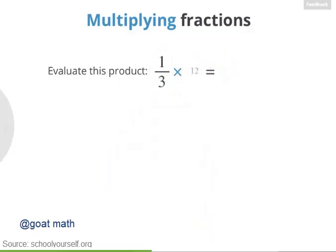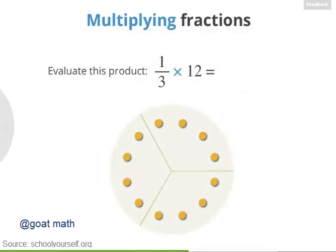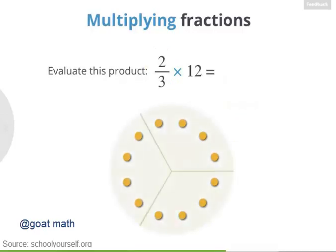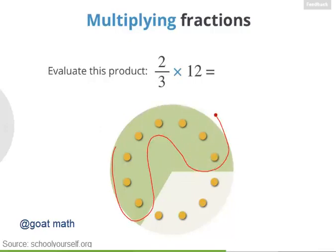What's one third times 12? Instead of adding up 12 thirds, try taking one third of this group of 12 dots. Here's how we can divide the 12 dots into 3 equal groups, so one third times 12 equals 4. Next, what's two thirds times 12? We can divide this group into thirds again and then look at two of those thirds. There are 8 dots there, so 2 thirds times 12 equals 8.